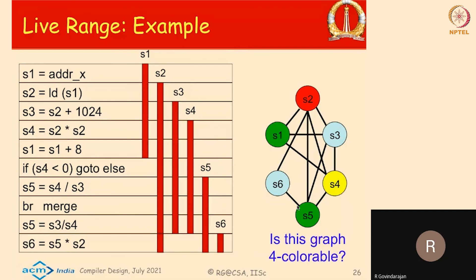S1, S2, S3, and S4 all have different colors because they are adjacent to each other — there is a clique between them, where each is adjacent to every other of the three nodes. They are given four different colors. S5 is given green because S5 is not adjacent to S1, which is also green. S6 is given blue because it is not adjacent to S3, which is blue. S6 could have been given red or yellow as well. This is essentially the graph coloring problem.